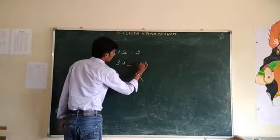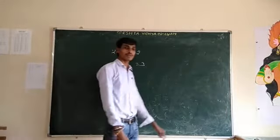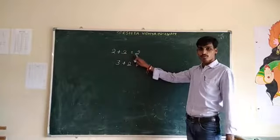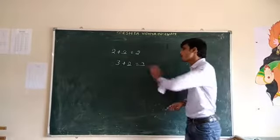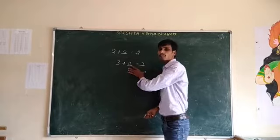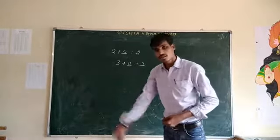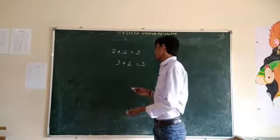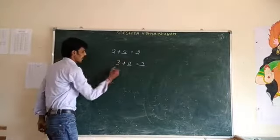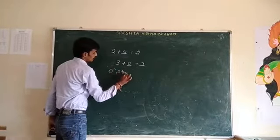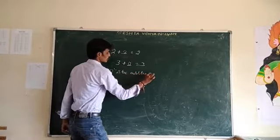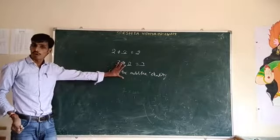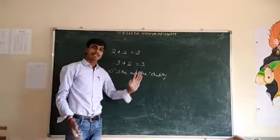Now fill: 3 plus blank is equal to 3. What is the number? Again 0. By observing these two examples, we conclude that when you add 0 with any number, the result will be the same. So that means 0 is the additive identity over addition.